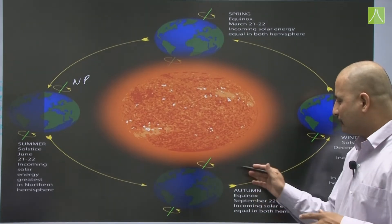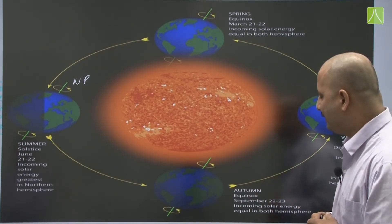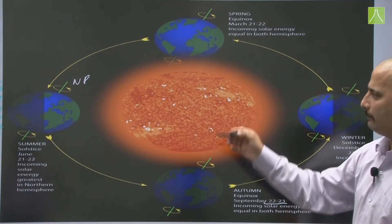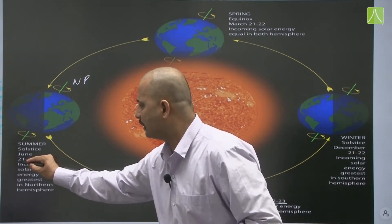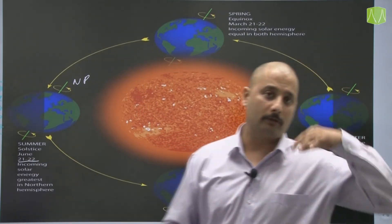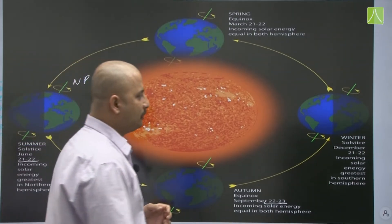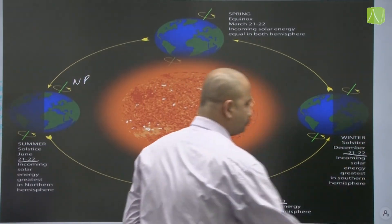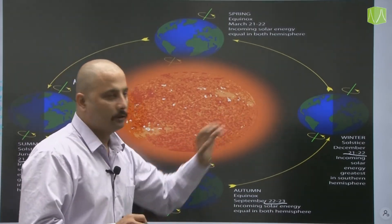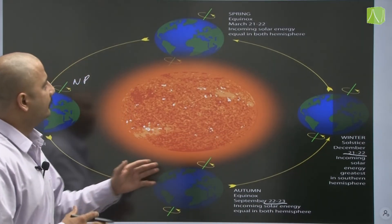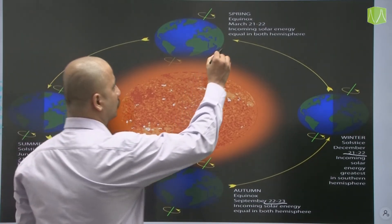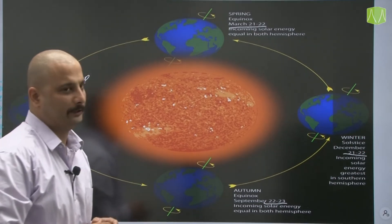Autumn equinox: again equal amount of sunlight is received during September 22 and 23. You can mark these dates and write them down. Then the third position: winter solstice happens on December 21 and 22, with incoming solar energy greatest on the south pole — that is, in the southern hemisphere. Then the spring equinox happens in the month of March, March 21 to 22.